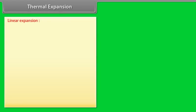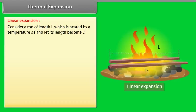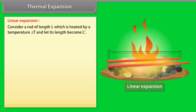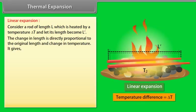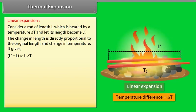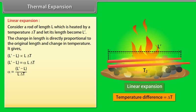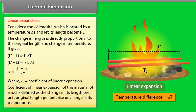Linear expansion: Consider a rod of length L heated by temperature ΔT, and let its new length be L'. The change in length is directly proportional to the original length and change in temperature: L' − L = αLΔT. The value of α = (L' − L)/(LΔT), where α is the coefficient of linear expansion — defined as the change in length per unit original length per unit rise in temperature.